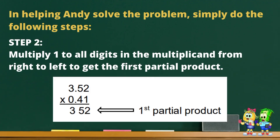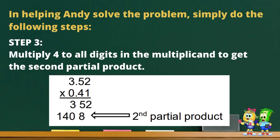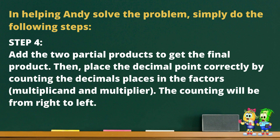Step two, multiply one to all digits in the multiplicand from right to left to get the first partial product: one times two equals two, one times five equals five, one times three equals three. That's the first partial product. Step three, multiply four to all digits in the multiplicand to get the second partial product. Step four, add the two partial products to get the final product. Then, place the decimal point correctly by counting the decimal places in the factors — multiplicand and multiplier — from right to left.